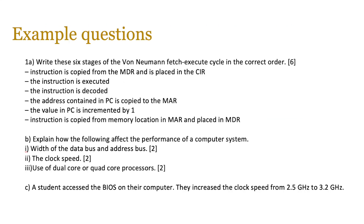We're going to go back a few lessons to check your knowledge of von Neumann architecture, how the performance of a computer system is impacted, and what happens when a student accesses the BIOS and increases the clock speed from 2.5 GHz to 3.2 GHz. What is the result of that? What could go wrong, and what could the benefits be? You will need to be able to discuss that.